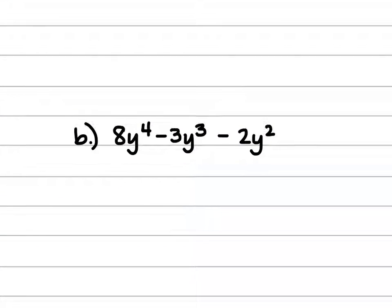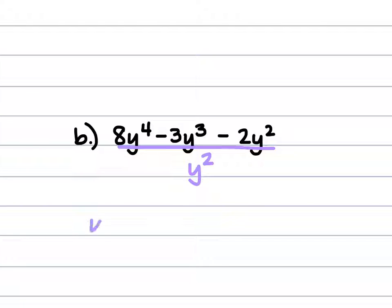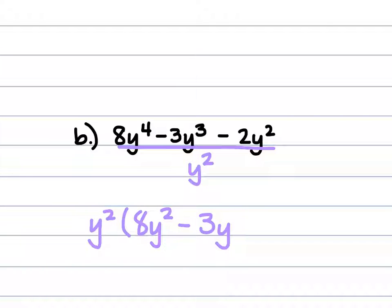For b, we have 8y⁴ minus 3y³ minus 2y². The greatest common factor is y squared, so we pull out y² out front, leaving 8y² minus 3y minus 2 inside the parentheses.